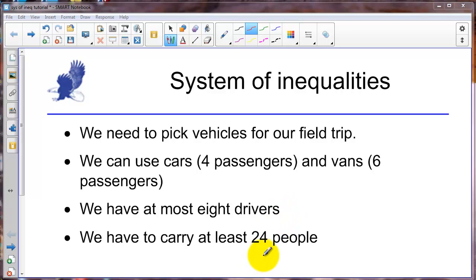And we have to carry at least 24 people. So these inequality statements here mean that we could get by with theoretically less than eight drivers, so we could do two drivers, five drivers, whatever is required.